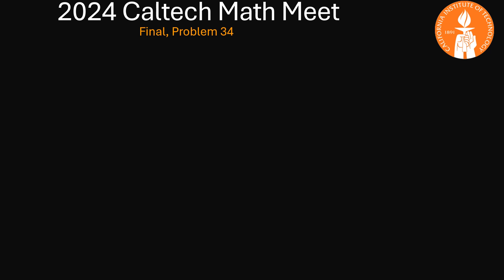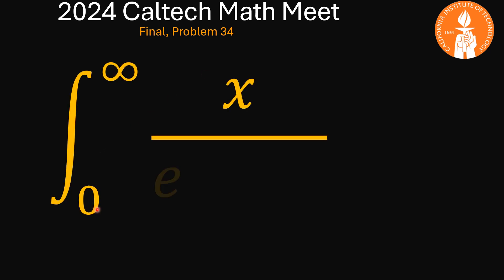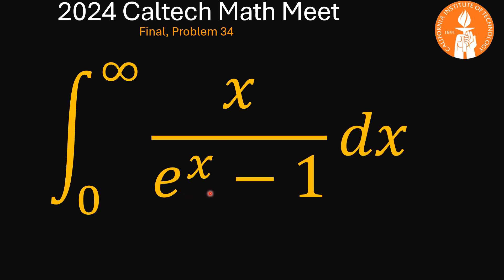Welcome to Everyday Mathematics. Today we are on problem 34 of the 2024 Caltech Mathematics MIT final. The problem is the definite integral from x equals 0 to infinity of x over e to the power x minus 1. This is what we're going to focus on today.